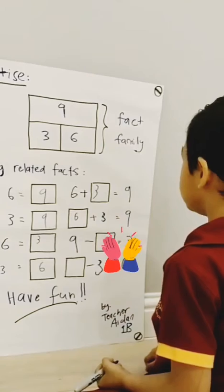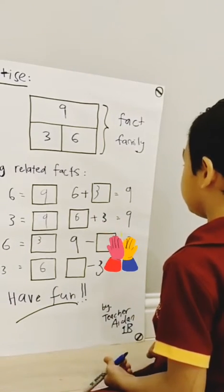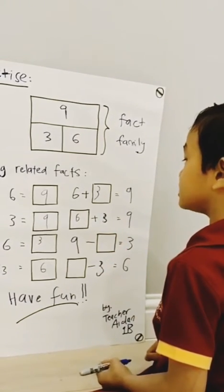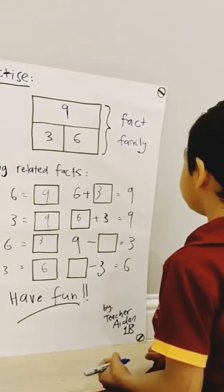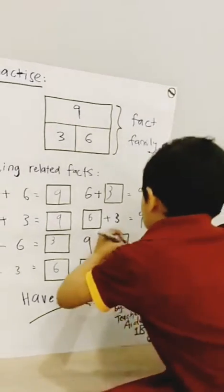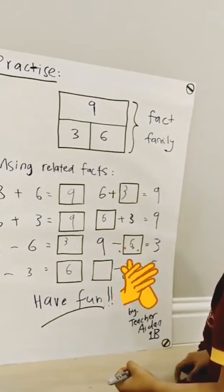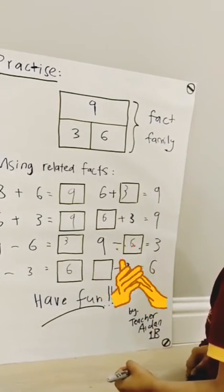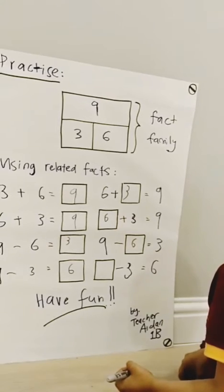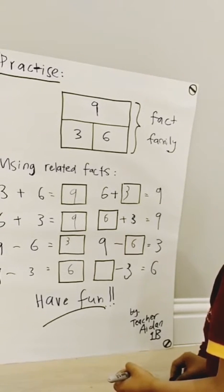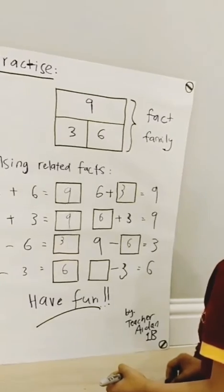9 minus something equals 3. If you guessed 6, you're correct. What is this one? Something minus 3 equals 6. If you say 9, you're correct.